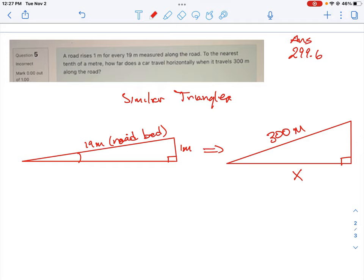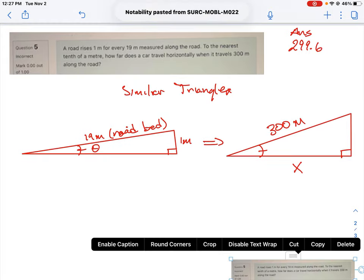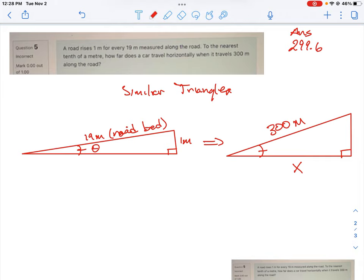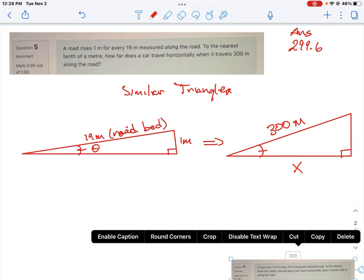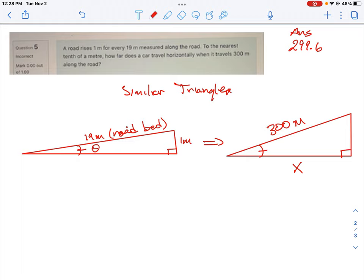So what we would have is these are going to be the same so we're gonna have a variable here theta for an angle. And then what we need to be able to do is calculate what the angle is which is going to be the same for both triangles and then allows us to calculate this horizontal distance X here.